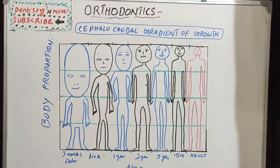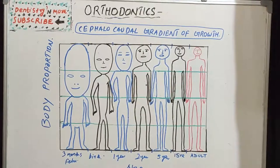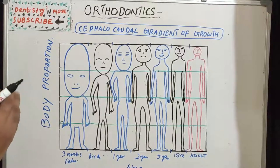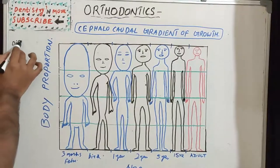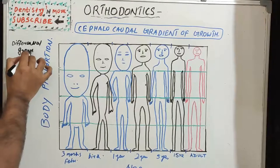Hello everyone, welcome back to another session in Dentistry and More. Today's topic in orthodontics is cephalocaudal gradient of growth. The pattern of growth in humans is different — there is a difference in the relative rates of growth between one part of the body and the other. The different parts and organs of the body grow at different times and to different extents. This is termed differential growth.